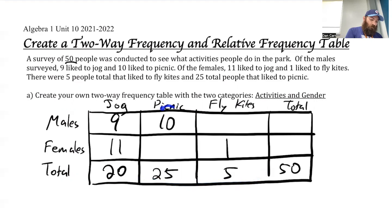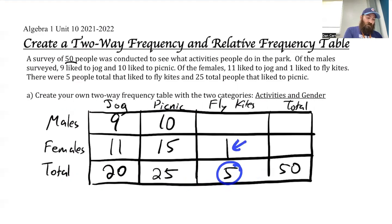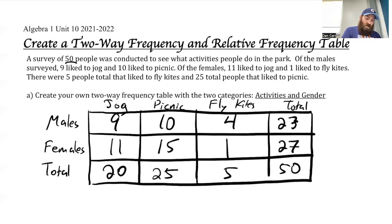If there were 10 males who like picnicking and 25 total, the only way for that to work is if there are 15 females that like to picnic. And I can do the same thing with flying kites — five total but only one female, so the rest have to be male. So from there, I'll total up left to right: 9 and 10 is 19 plus 4 is 23. And 11 and 15 is 26 plus 1 is 27. Quick check — 23 plus 27 does equal 50.